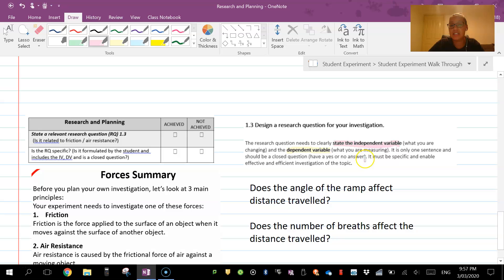Does the angle of the ramp affect the distance traveled? The independent variable in this case is the angle of the ramp—we changed that because we had high, medium, and low. In the case of the dependent variable, it's the distance traveled, or if you want to be more specific, the distance traveled by the toy car.